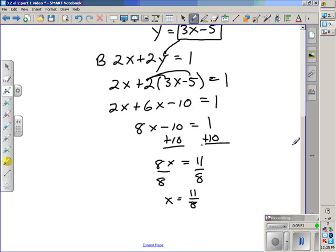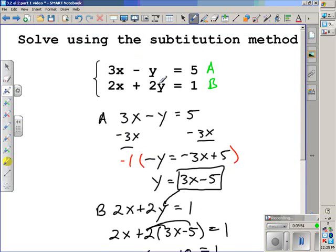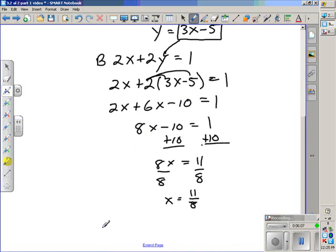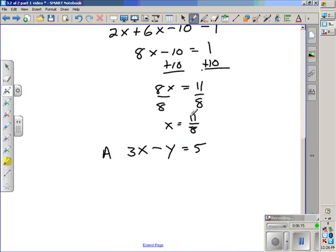We still need to find the value of y. So let's go back to our original equations. Since y has no coefficient, I think it's going to be easier to use equation A to do that. So 3x - y = 5. We'll use equation A. Remember, we're going to be substituting 11/8 in for x. So that will give us 3(11/8) - y = 5. 3 times 11/8 gives us 33/8 - y.